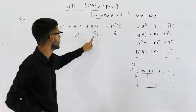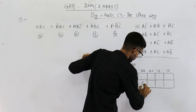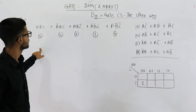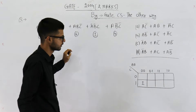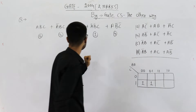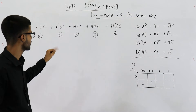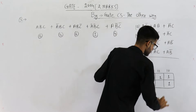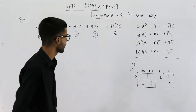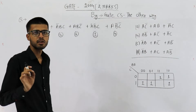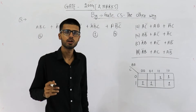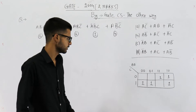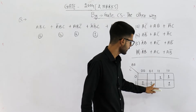Now let's fill the K-map. 0 0 1 means minterm 1, so I filled 1 there. Next is minterm 3, then 4, 5, and 6. I've filled the K-map — these are all the minterms, meaning all the places where the function outputs 1.